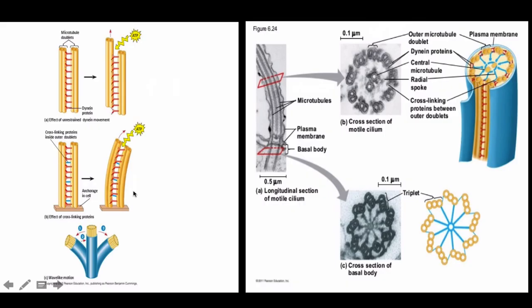Both cilia and flagella use a unique motor protein called dynein. Without a cross-linking anchor protein, when dynein contracts it moves microtubules along similar to kinesin. But when an anchoring protein is involved, contraction of the dynein causes the cilia or flagella to bend back and forth through contraction and relaxation — that's how we move things like the sperm tail or propel material up the respiratory tract.